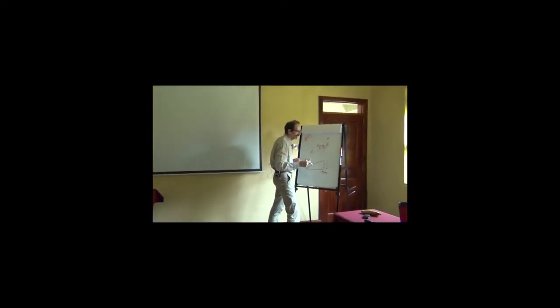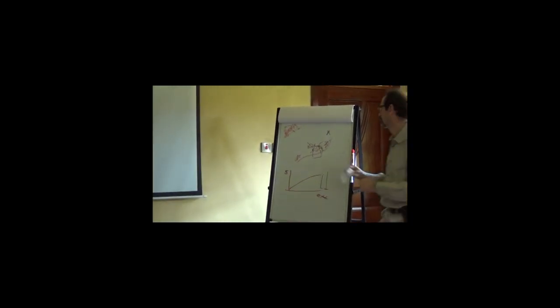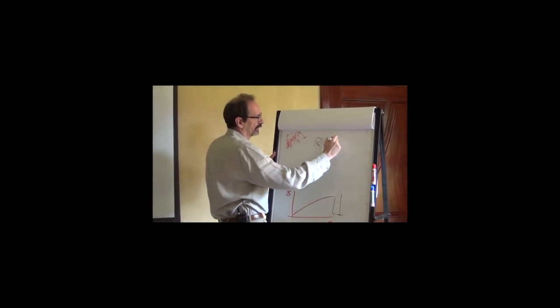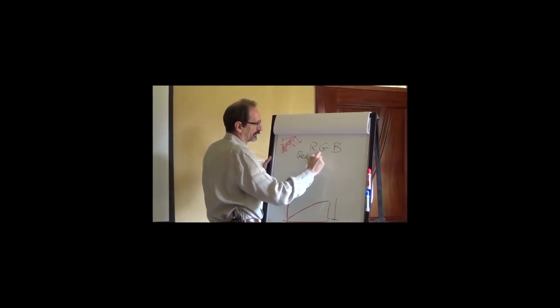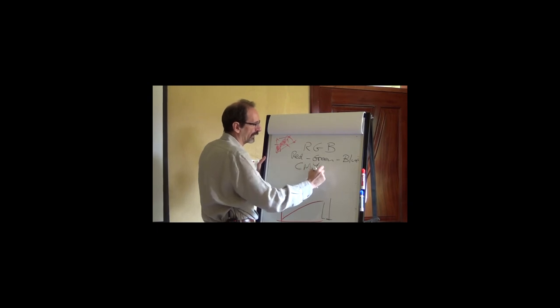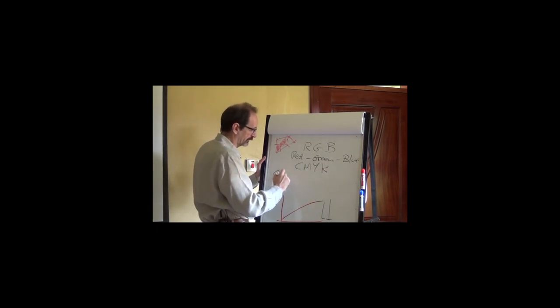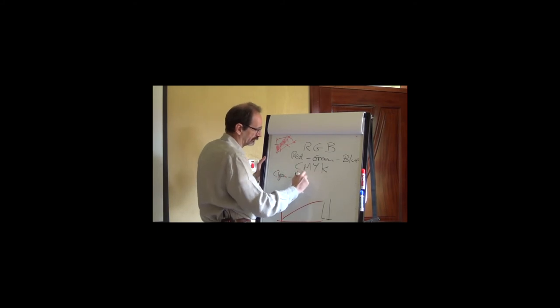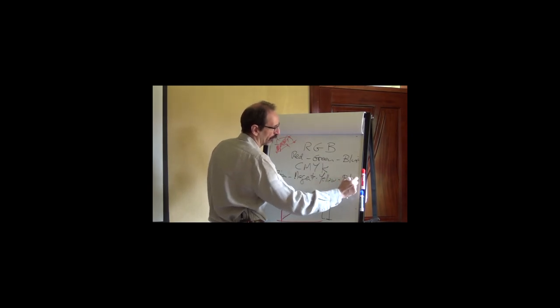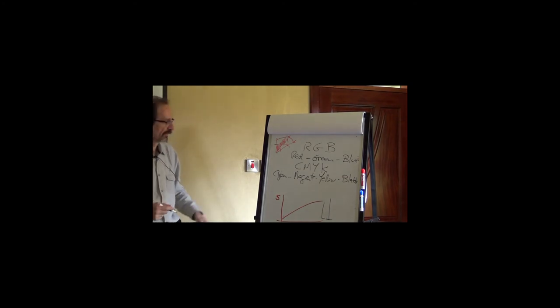CMYK. It's a system of colors. There are two, the two main color systems are RGB, which means red, green, and blue. And CMYK, which is cyan, magenta, yellow. And this stands for black, so as not to be confused with blue.